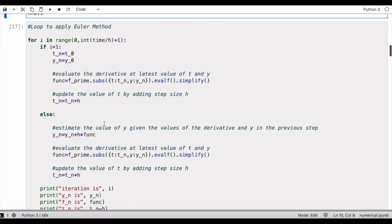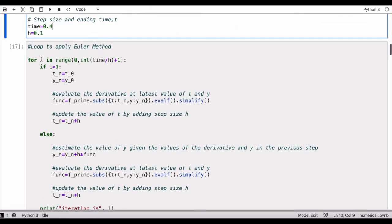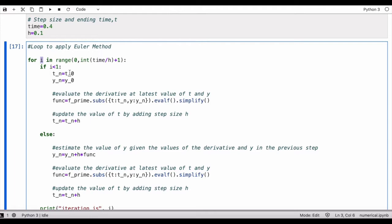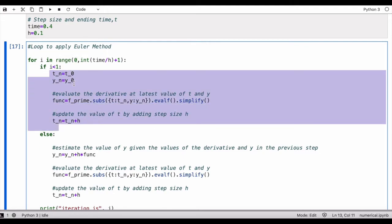We can write this small loop to apply the Euler method. In the very first iteration, i is going to be 0 in here, and so when i is less than 1, which is for the very first case when i equals 0, we will run this block of the code.